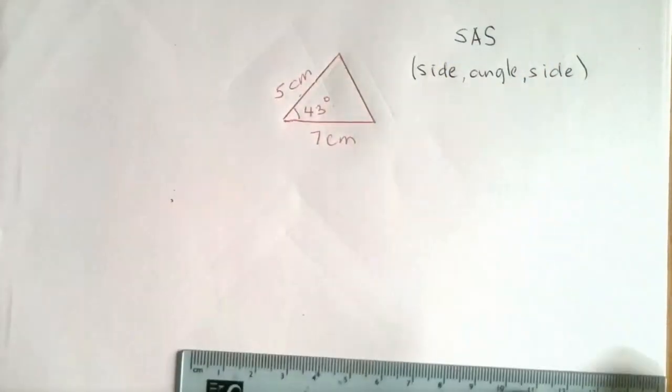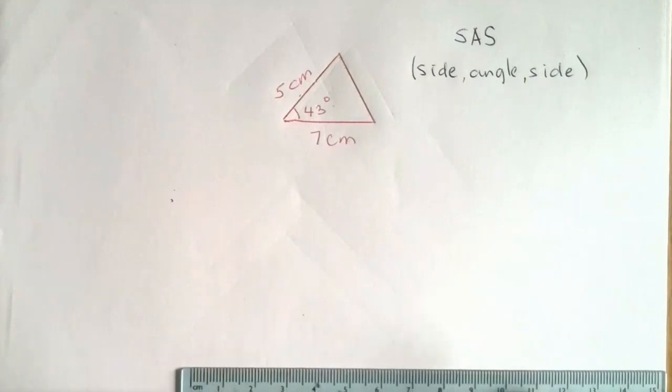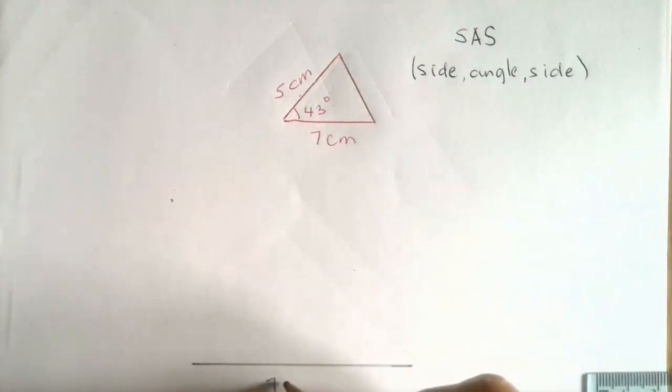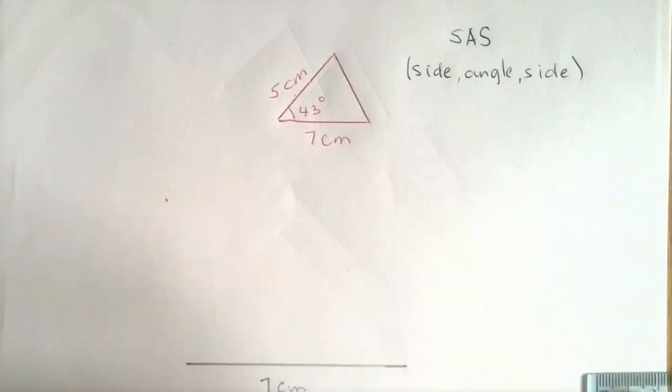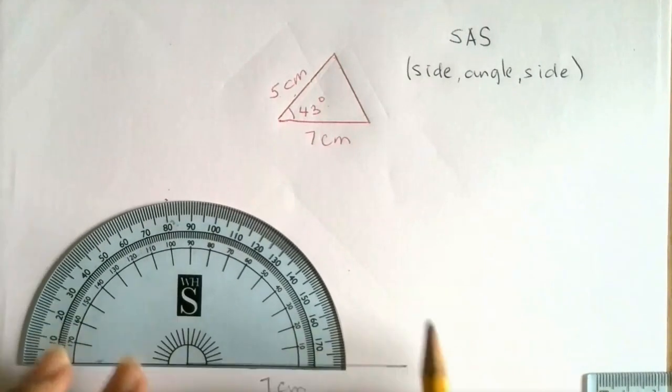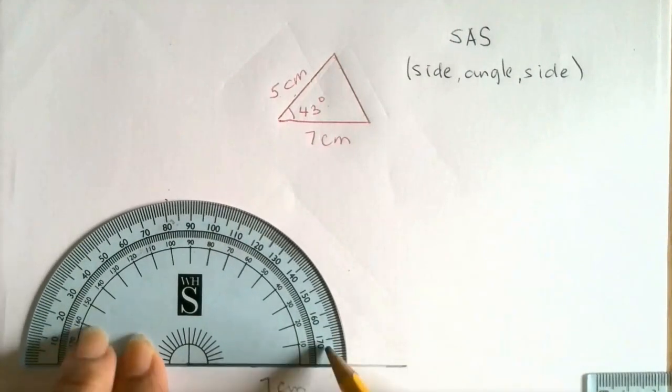So first we're going to measure the seven centimeter side, so using a ruler measure seven centimeters and label the dimension. Next we're going to measure the angle 43 degrees using a protractor.